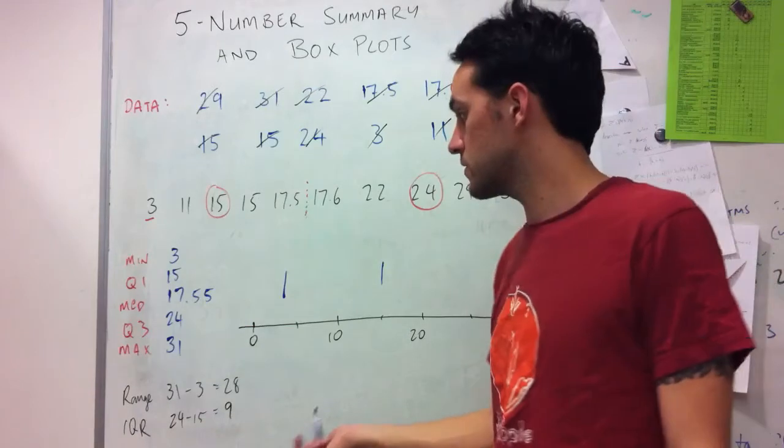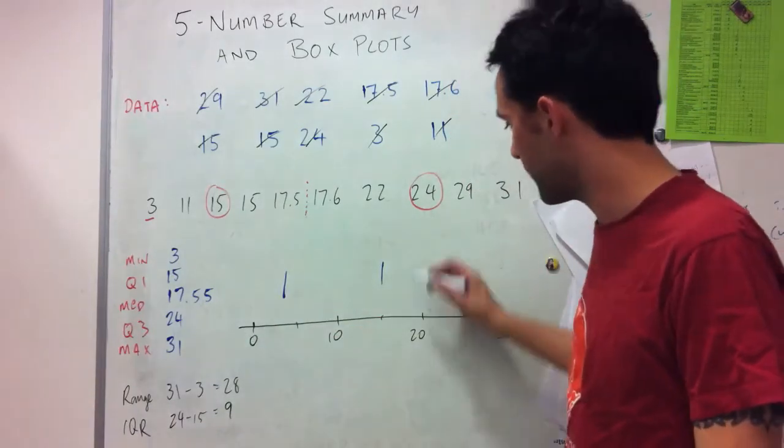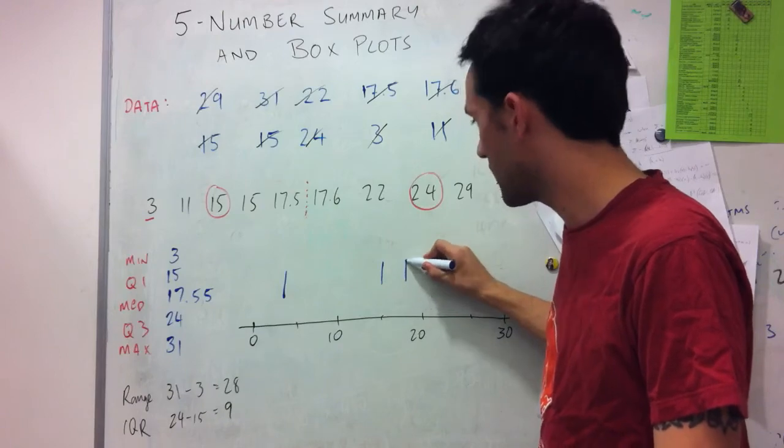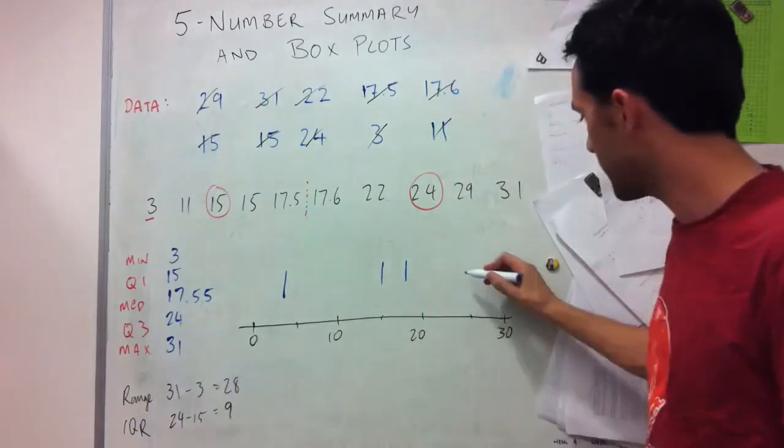My median, which can also be considered as the Q2 value, is 17.55. So that's pretty much right in the middle here. My Q3 is 24.